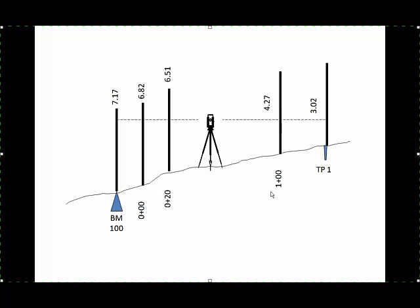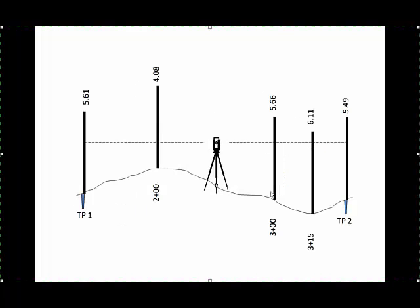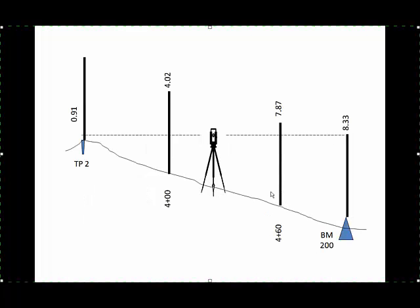So just as in the previous slide, we had one backsight and four foresights. Here we have one backsight on turning point 1 to establish the HI of the instrument, and then four foresights. One of those four foresights is the foresight onto the turning point. The other three foresights are side shots. On this profile circuit, in our third setup, one backsight on turning point 2 followed by three foresights, two of which are side shots, and the final shot is a foresight closing onto benchmark 200.